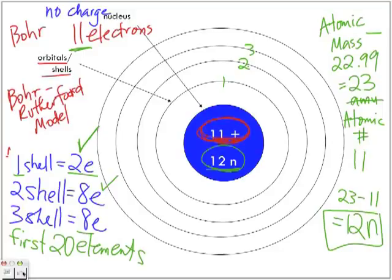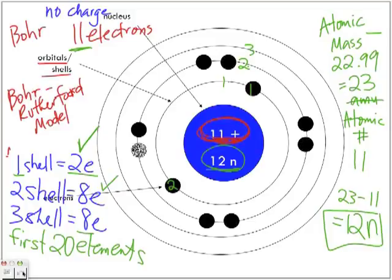When drawing electrons, place one at each position — think of it like the four points of a plus sign — before pairing them up. So in the second shell: 1, 2, 3, 4, then when we reach electron 5 we start pairing. Continuing: 5, 6, 7, 8, 9, 10 — now the second shell is filled with 8 electrons. The 11th electron goes on the third shell.